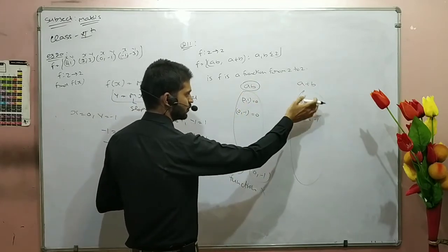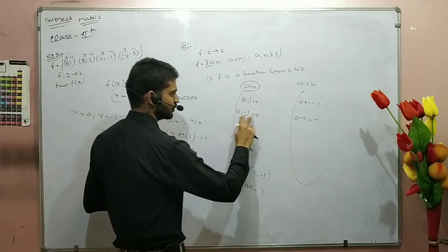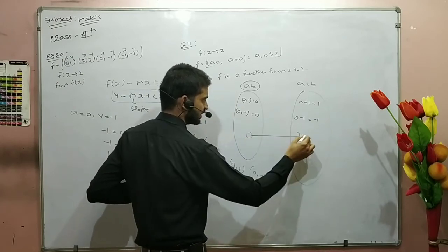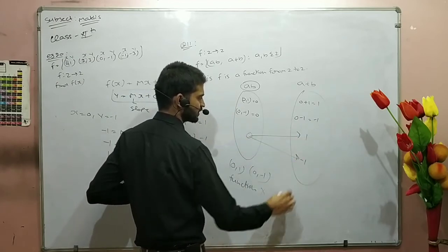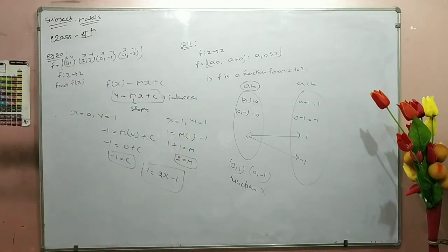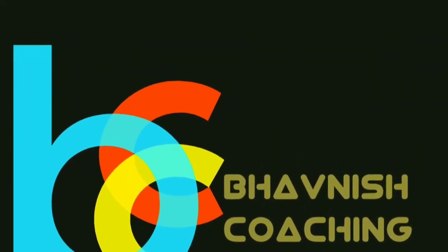When I put (0, 1), then I will create (0, -1). So what do I mean? 0 has two images, one image and one image, so this is not a function. This is going to be like a full explanation of this.